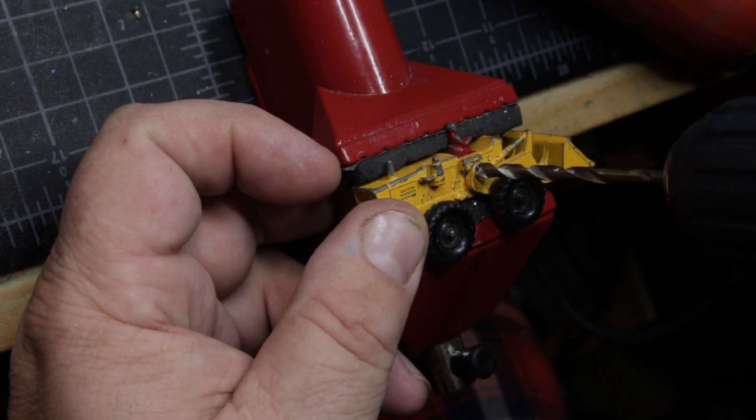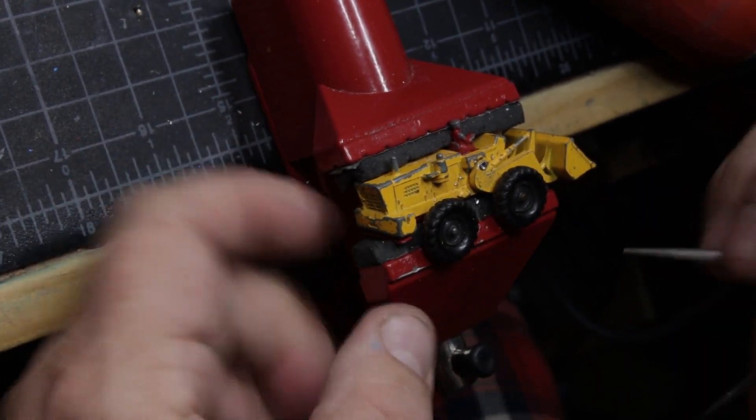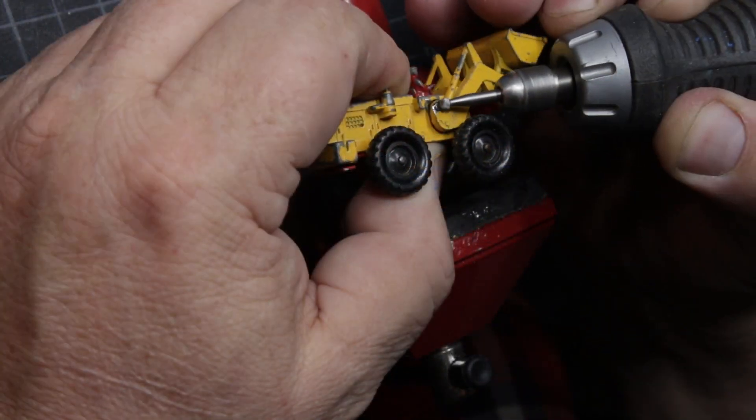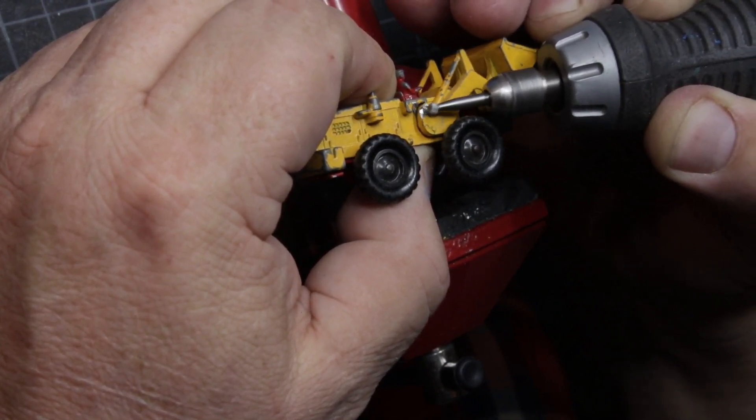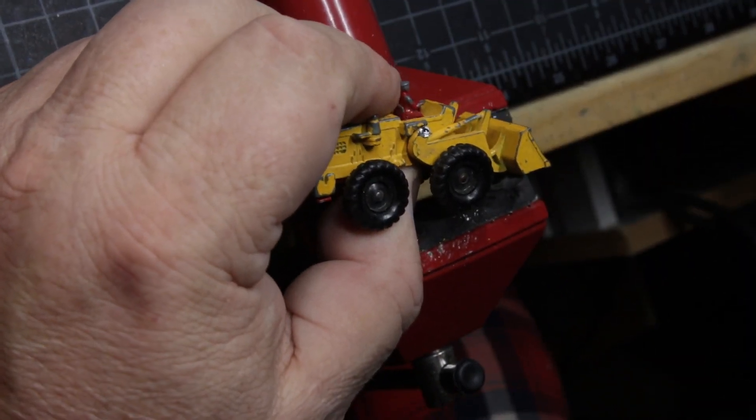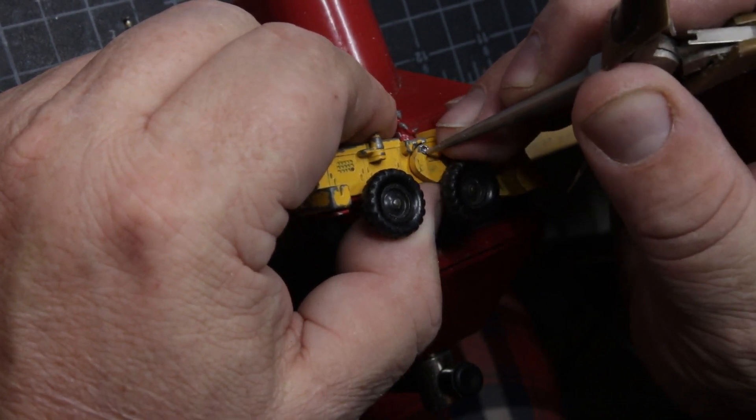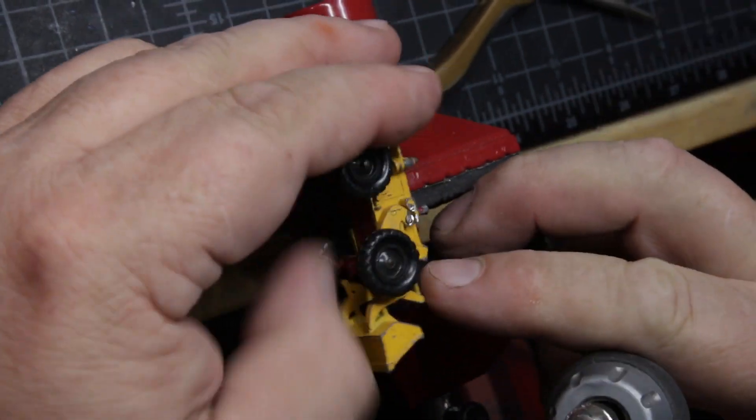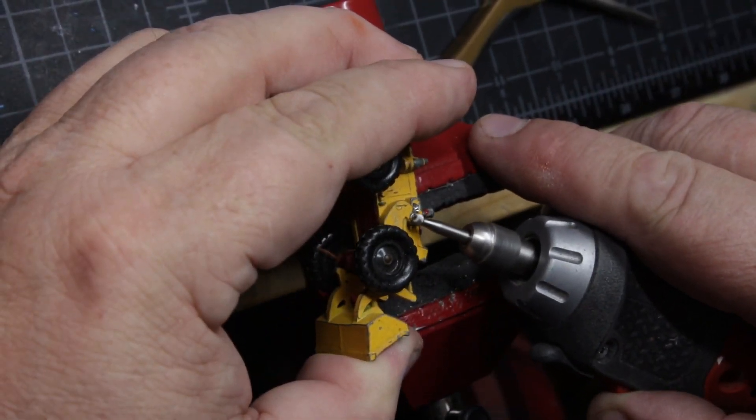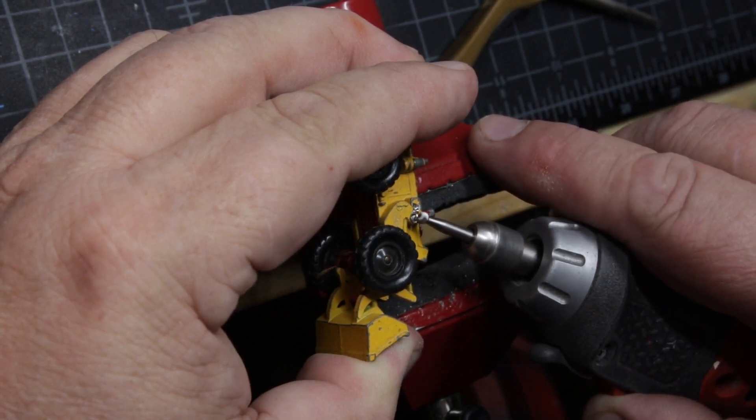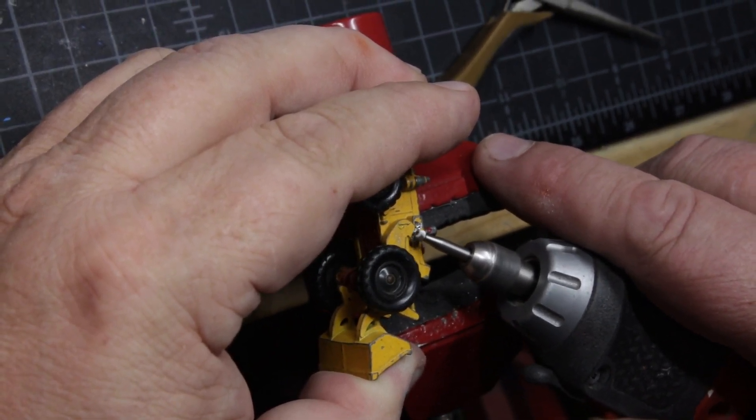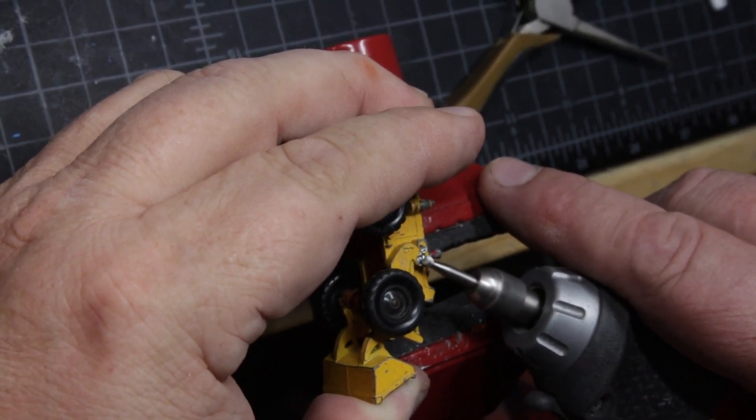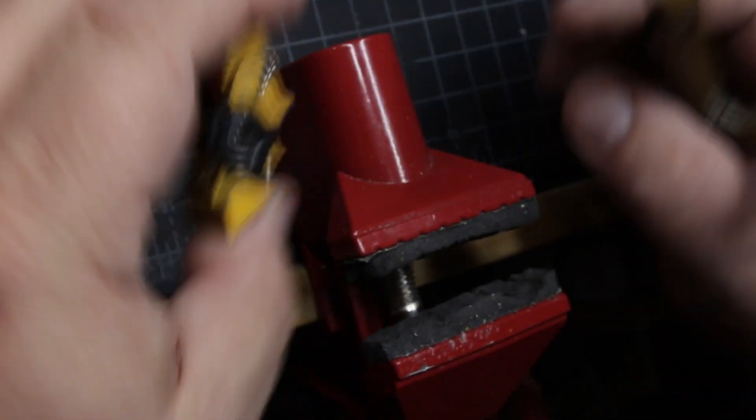And used a drill to drill a lot of it away. Again, I don't want to hit the casting with the drill bit. So once I got down to a certain point, I took my little grinder ball and cleaned up the last little bit of that pin head. And there you go, now it's in pieces and I can get that chassis out.